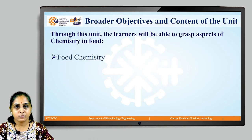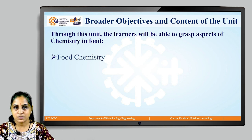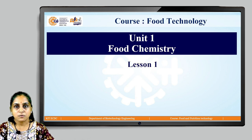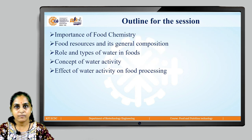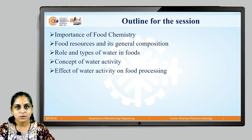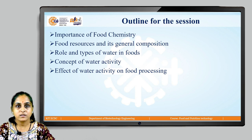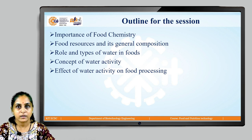Through this particular unit, the learners will be able to grasp the aspects of Food Chemistry. Let us start with lesson 1 today and the outline for the session are: importance of Food Chemistry, food resources and its composition, different types of water in food, role of water, concept of water activity, and effect of water activity on food processing.